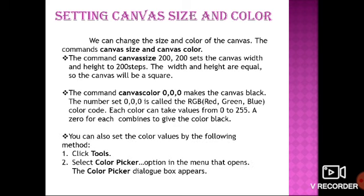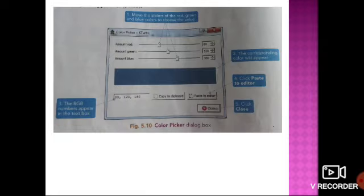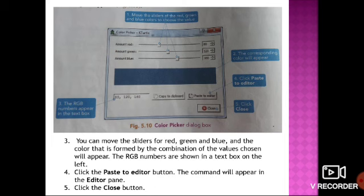You can also set the color values using the following method: click Tools and select the Color Picker option from the menu. The Color Picker dialog box appears. In this dialog box, you can move the slider for Red, Green, and Blue. The color formed by the combination of the chosen values will appear, and the RGB numbers are shown in the text box on the left.